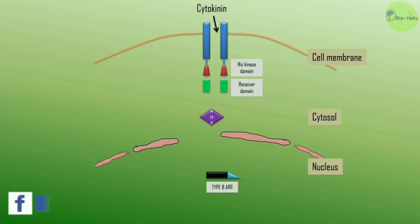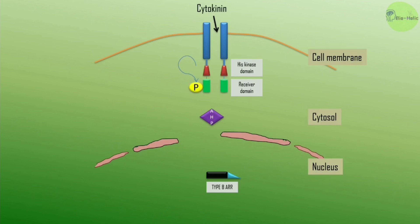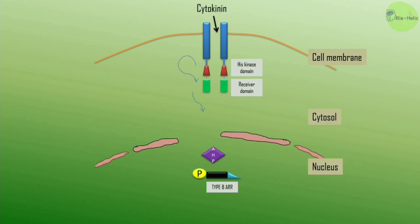Here you can visualize the mechanism of action of cytokinin in an animated way. Cytokinin binds to its receptor, the histidine kinase receptor, which consists of a histidine kinase domain and a receiver domain. Binding of cytokinin causes autophosphorylation in the histidine kinase domain; this phosphate is then transferred to the receiver domain, and from there to the AHP. After binding to AHP, it enters the nucleus from the cytosol, phosphorylates the type-B response regulator, causing alterations in transcription and ultimately cellular changes. Thus cytokinin triggers a signal transduction mechanism.